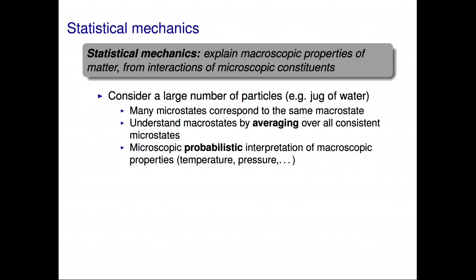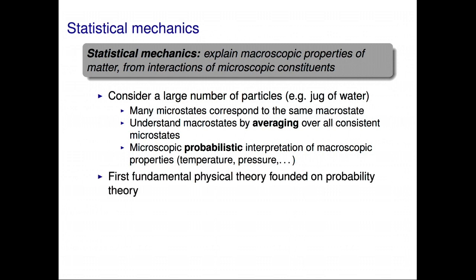Now let's think about temperature for a moment. What does it actually mean? It somehow quantifies if something is hot or cold. But each H₂O molecule in a jug of water is identical — there are no hot molecules or cold molecules. Temperature is not a property of one molecule; it is a property of a large number of molecules and how they interact. Statistical mechanics gives a precise definition of macroscopic properties like temperature using probability theory. Statistical mechanics was the first fundamental application of probability theory to theoretical physics, and its use there was initially quite controversial — seemingly in stark contrast to the determinism of Newtonian mechanics.